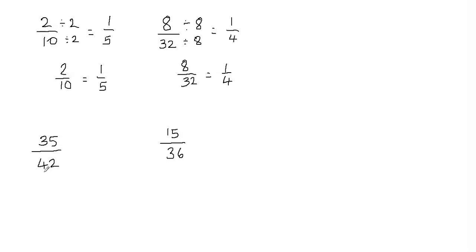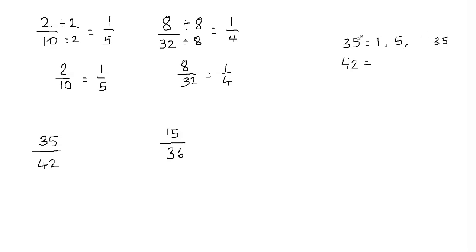In that case, what we're going to do is list down the factors of 35 and 42. The factors of 35 are going to be 1 and 35. 35 is also divisible by 5. And we know that 7 times 5 is also 35, so 35 is divisible by 7 as well. So the factors of 35 are 1, 5, 7, and 35.